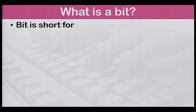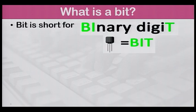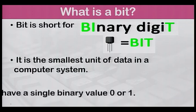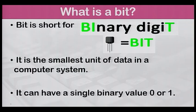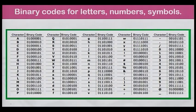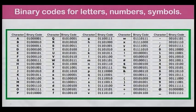Now, what is a bit? Bit is short for binary digit. It is the smallest unit of data in a computer system. It can have a single binary value: 0 or 1. In this picture, you can see the binary codes that represent different characters in the computer system. There are codes for letters, numbers, and special characters.